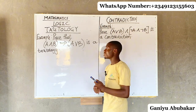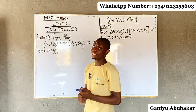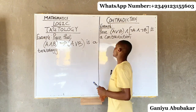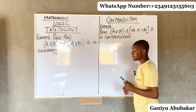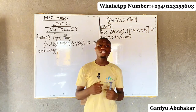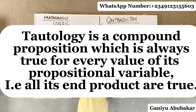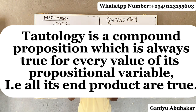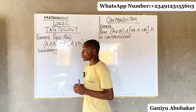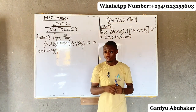Let's discuss tautology and its meaning, solve a problem, and also discuss contradiction and its meaning. By definition, tautology is a compound proposition which is always true for every value of its propositional variables — that is, all its end products are true.